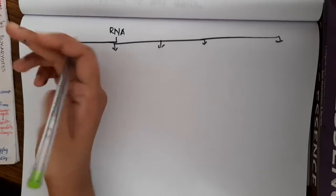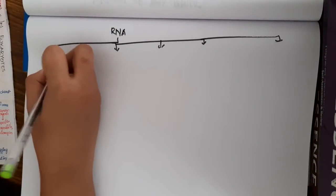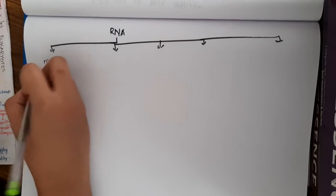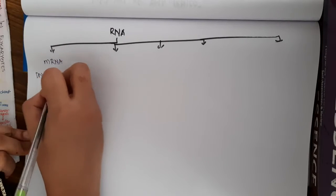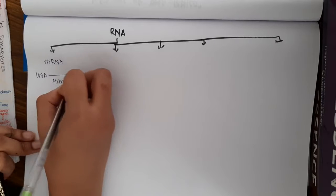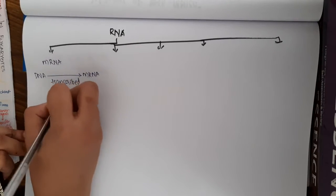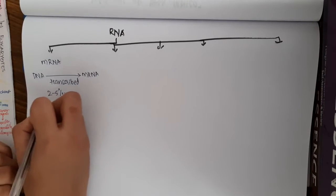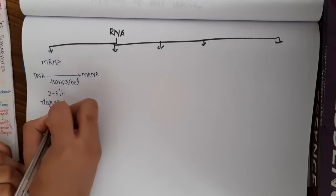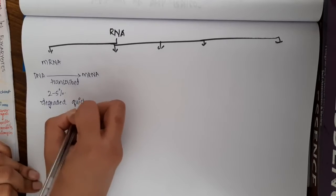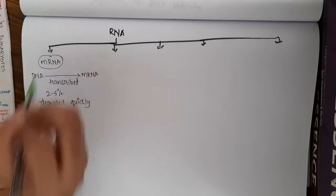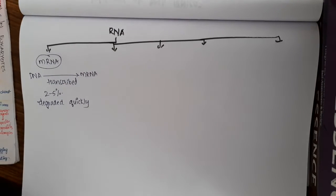The first is mRNA or messenger RNA. Here, DNA is transcribed into mRNA. This mRNA will constitute around 2-5% of total RNA. This is the type of RNA which is easily degraded, very easily when compared to others.